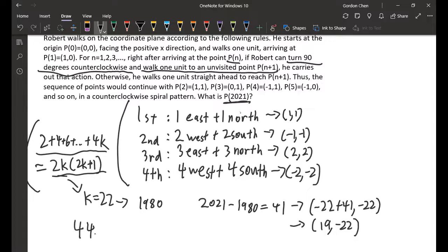44 times 45 is 1980, so we have that this is (-21, -22) at the current moment.